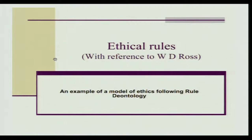We have talked about Immanuel Kant, who provided us with a deontological system which was without content. Now, before we start talking on Ross, let us quickly recapitulate what Kant said as a deontologist, and as to what Ross as a deontologist is different.